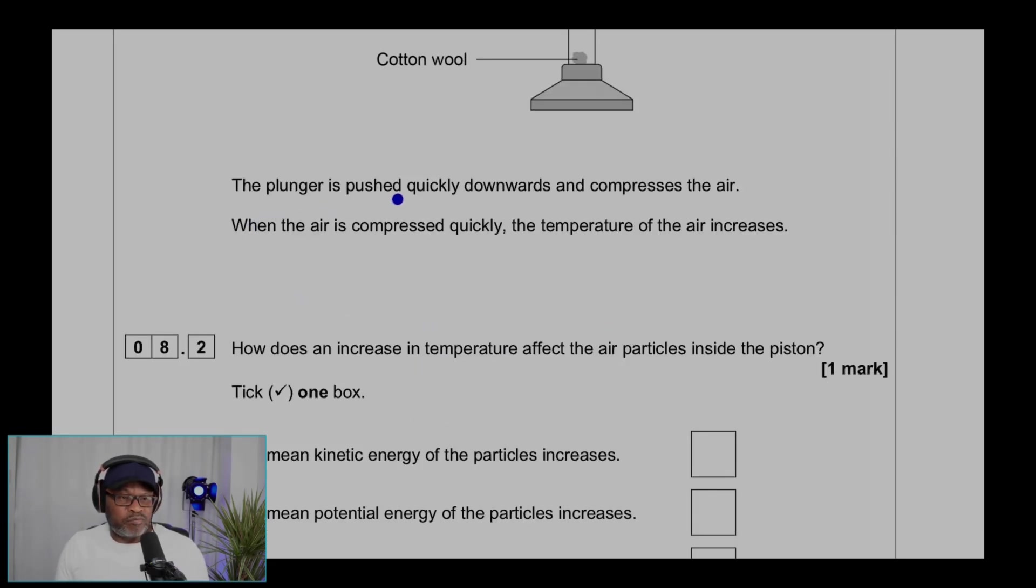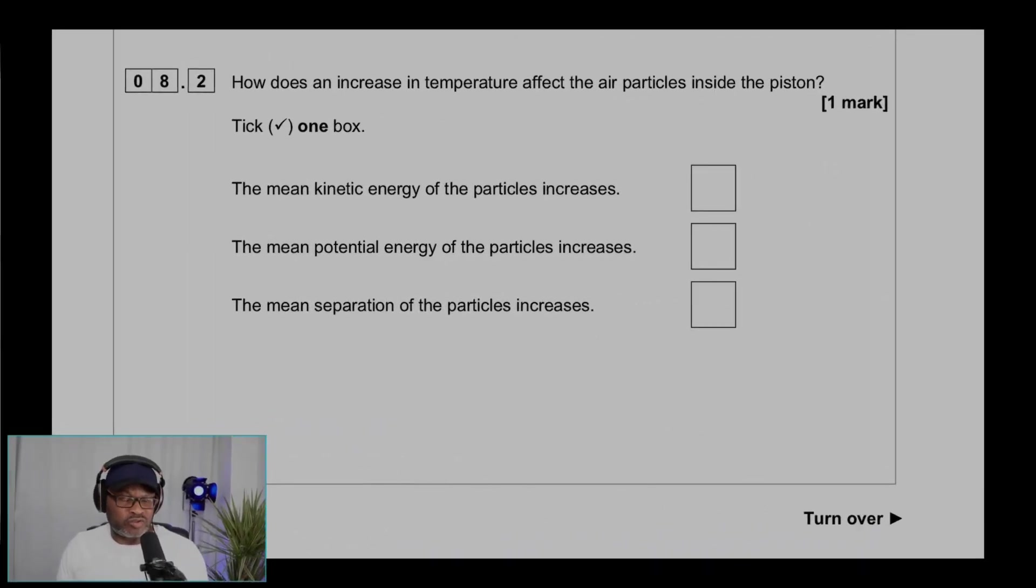The plunger is pushed quickly downwards and compresses the air. When the air is compressed quickly, the temperature of the air increases. Question 8.2: How does an increase in temperature affect the air particles inside the piston? One mark.